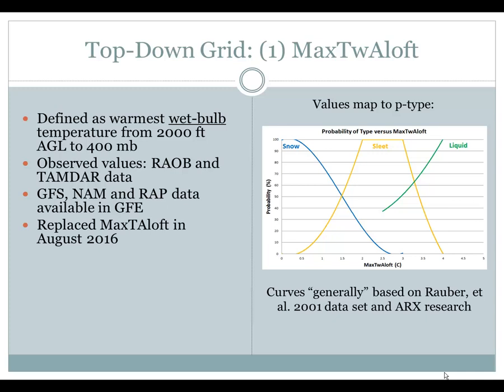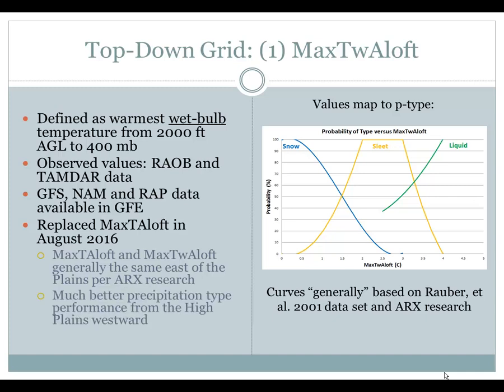This grid replaced the max temp aloft grid in August 2016. Generally, east of the plains, per research at La Crosse, the max temperature aloft and the max wet bulb aloft are the same — in mixed precipitation type events from Rauber and local research, they're almost identical, so no impact there. However, from the high plains on westward, there's much better precipitation type performance with this grid. On the right, you can see how the max wet bulb aloft maps to a precipitation type.